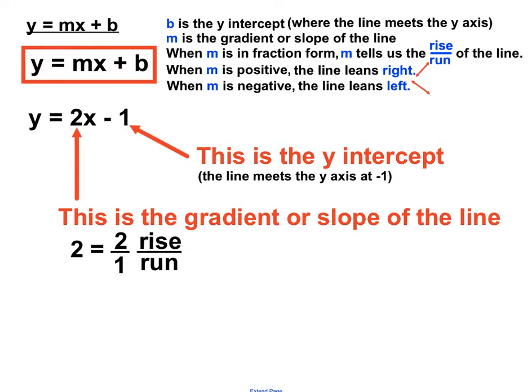So if we know where the line crosses the y-axis and the relationship between how far up it goes and how far across it goes, we only need to know one more thing to position this line on the number plane. And that is to figure out whether it leans to the right or the left.